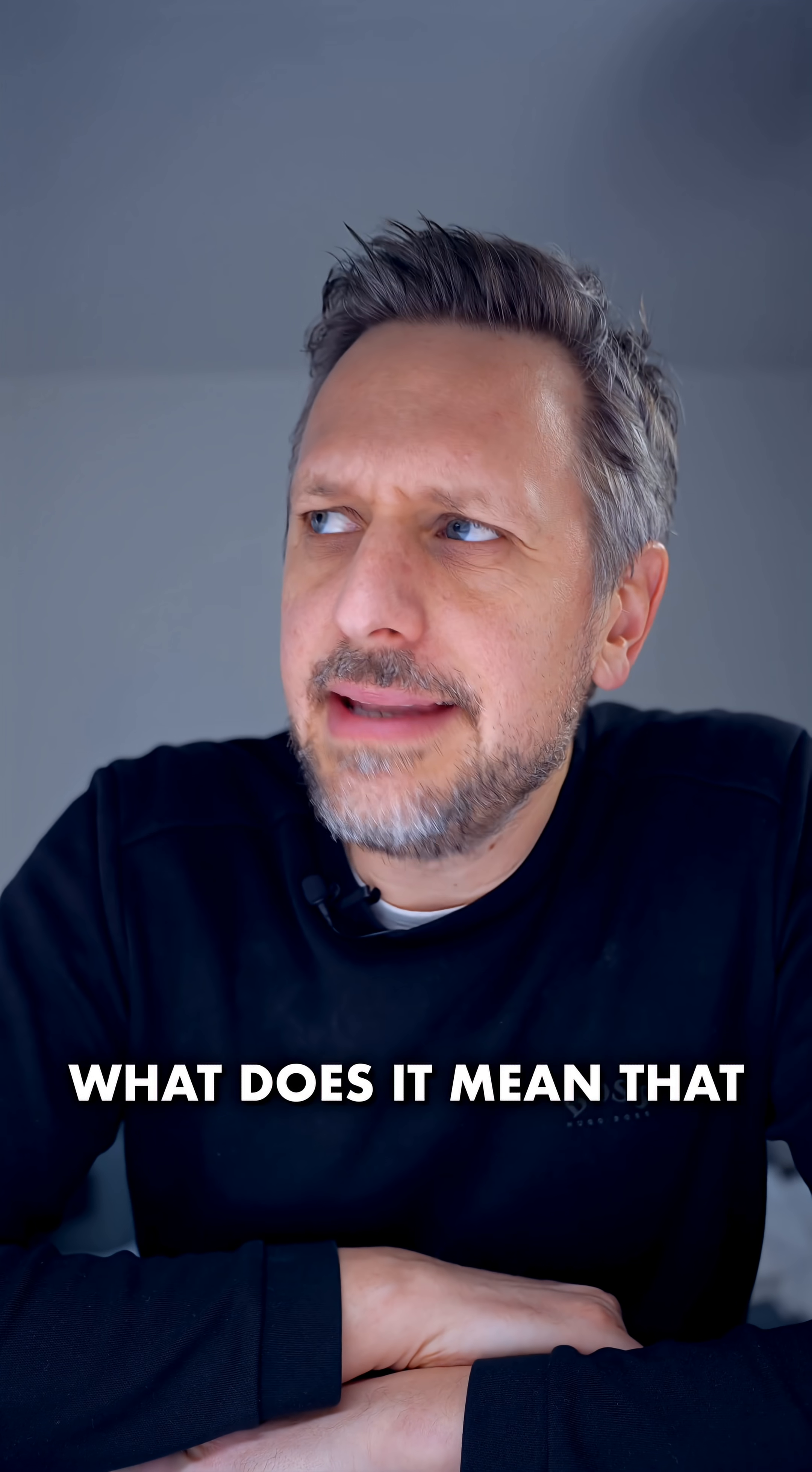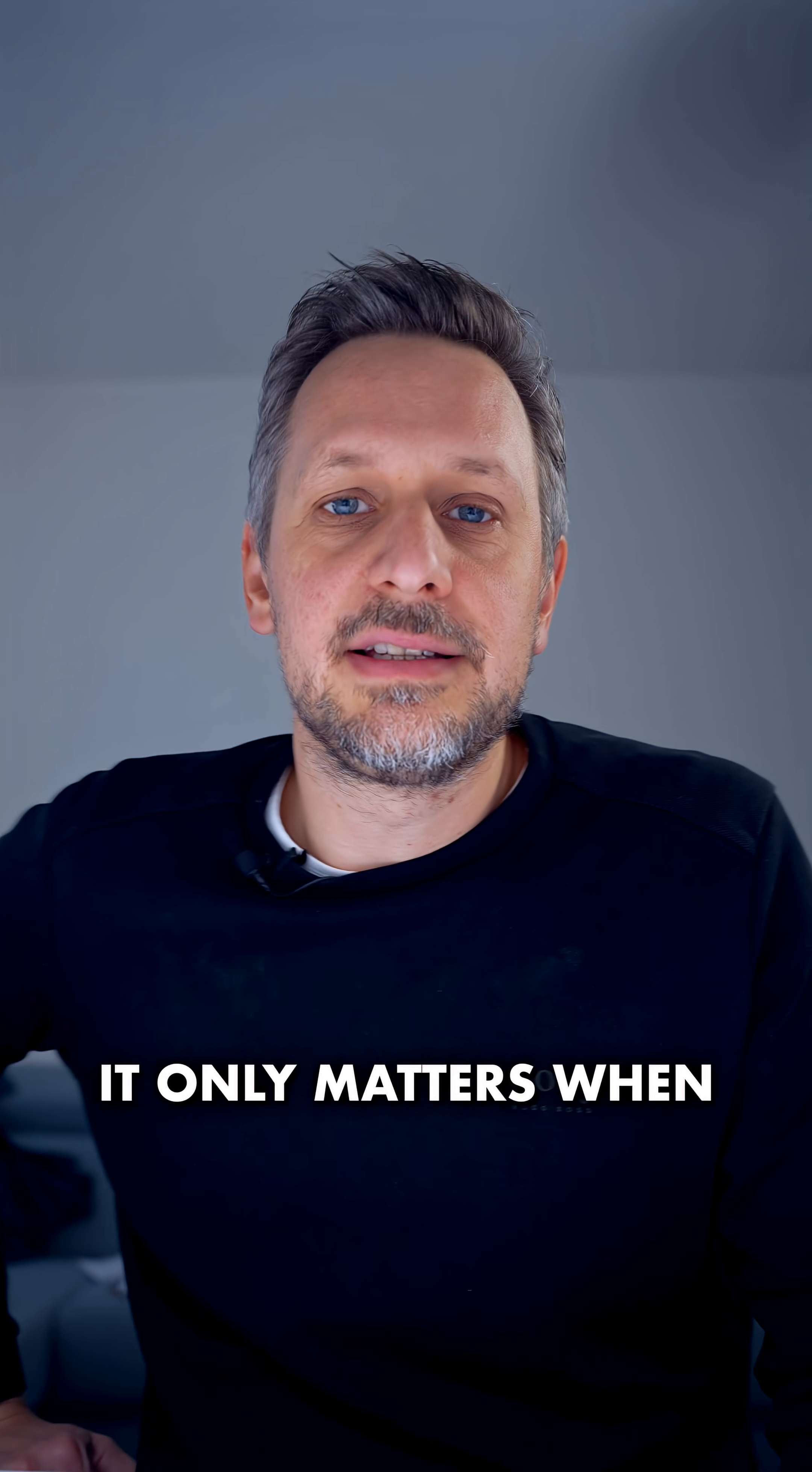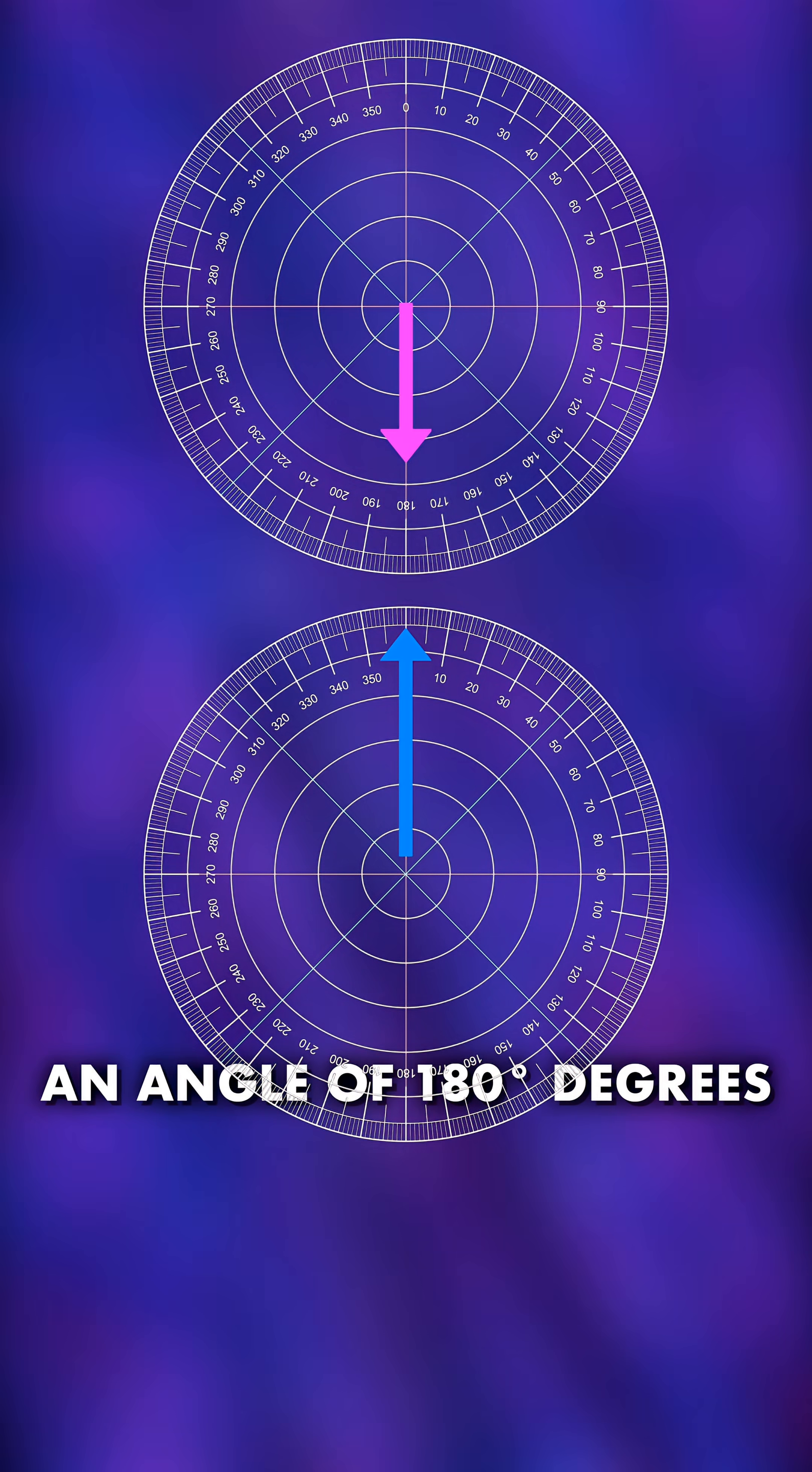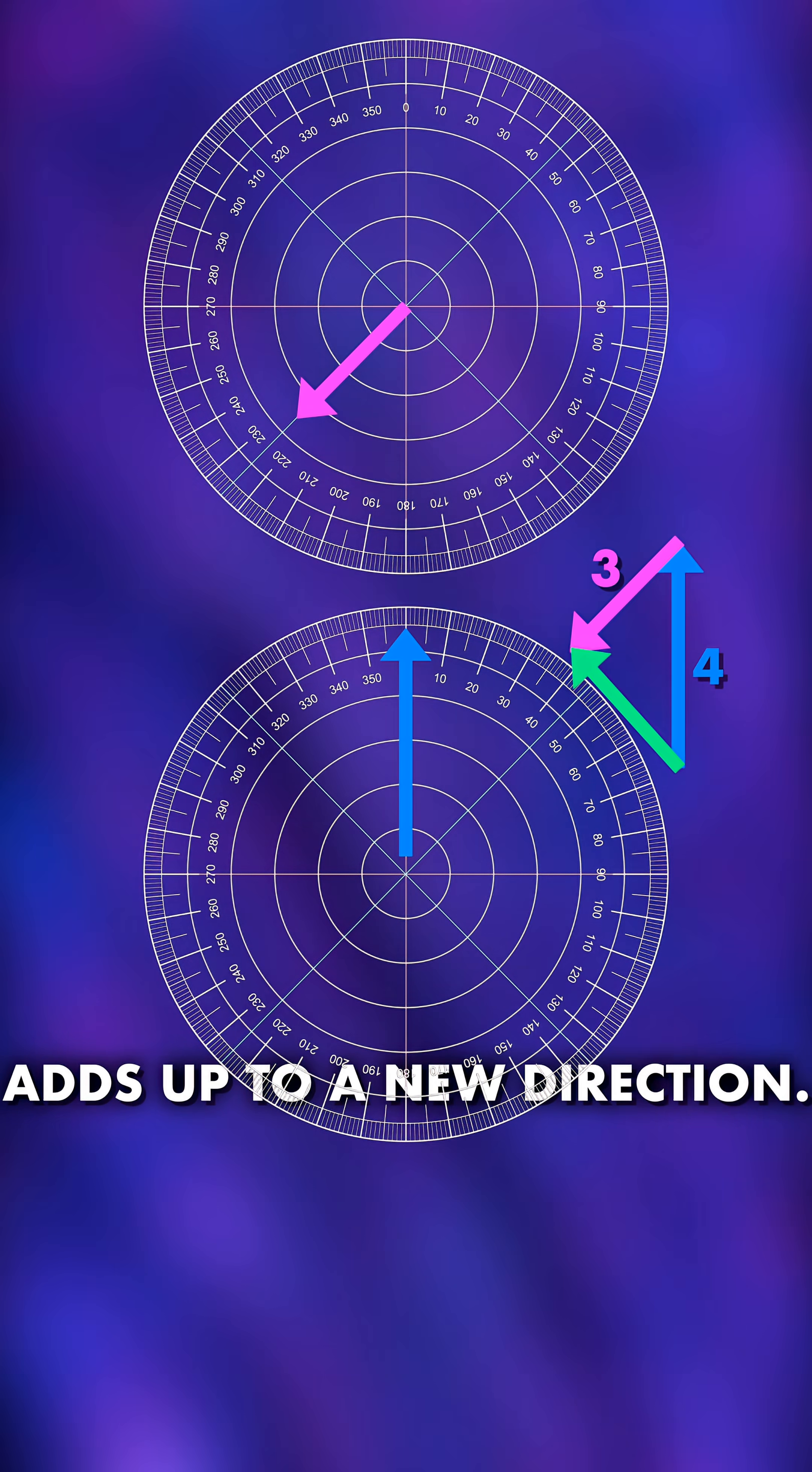What does it mean that qubits have a length and an angle? Well, the angle is called the phase, and it only matters when you add up two qubits. An angle of zero means they add up just like numbers, an angle of 180 degrees means they subtract, and anything in between adds up to a new direction.